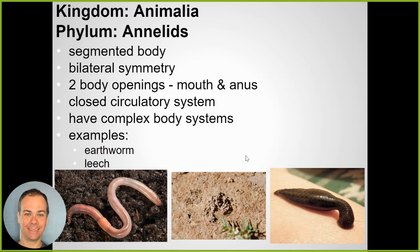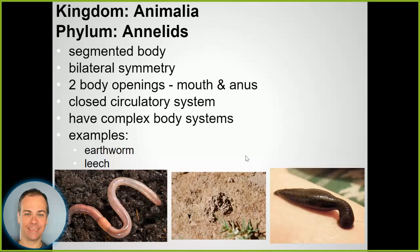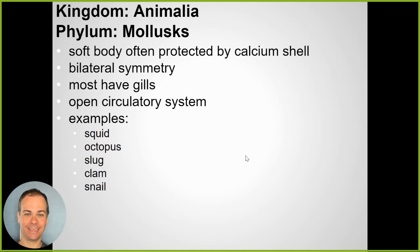Leeches are also segmented worms - blood-sucking worms that attach to their prey. They inject the wound with a substance that makes it numb so it doesn't hurt, and their saliva contains a compound that stops blood from clotting so they fill up with blood. Then they detach and digest that blood.